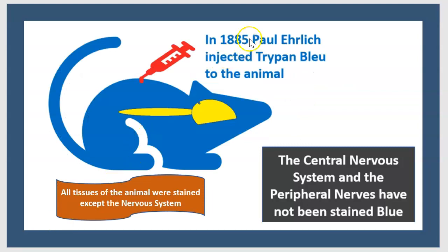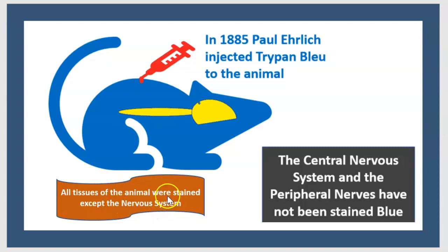In 1885, Paul Ehrlich injected trypan blue into an animal. All tissues of the animal were stained except the nervous system. The central nervous system and the peripheral nerves were not stained by the blue dye.